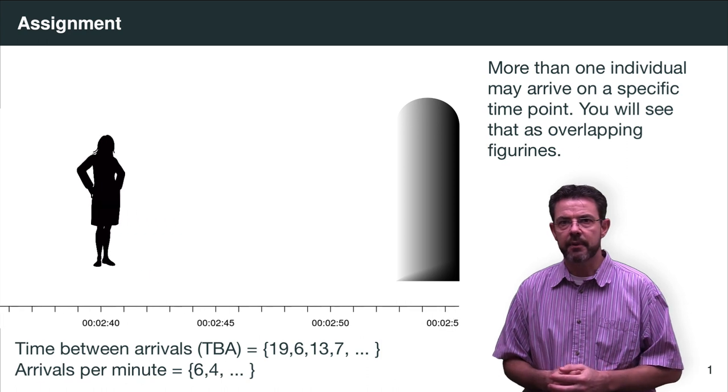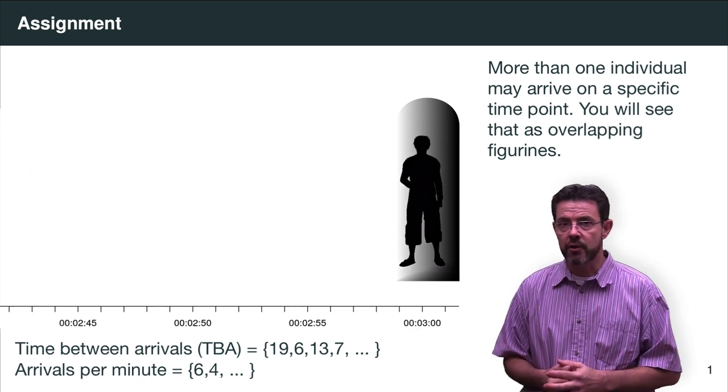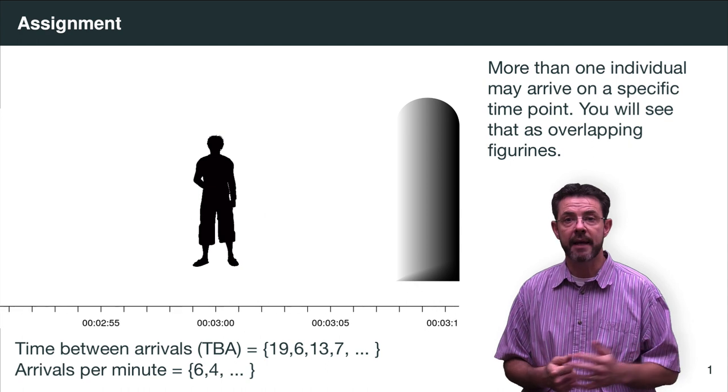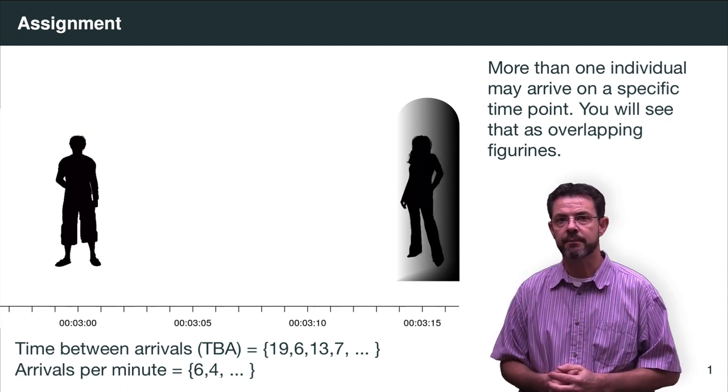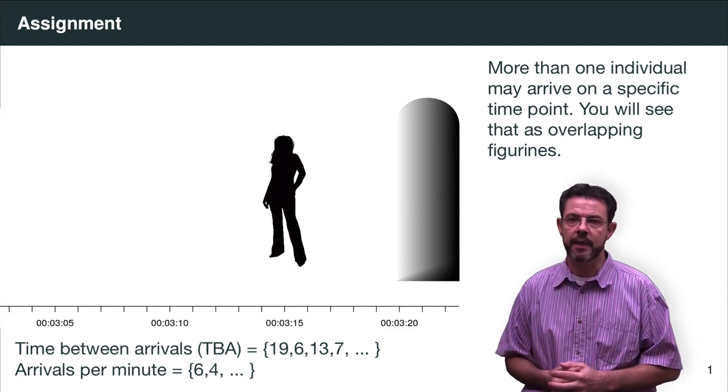The questions are fairly simple. They relate to the mean value of the time between arrivals and also the mean value of the number of arrivals per minute. We will give the data to you in two formats.